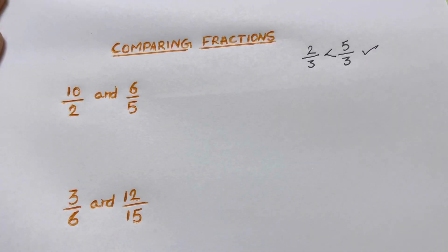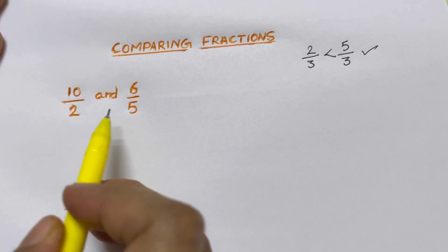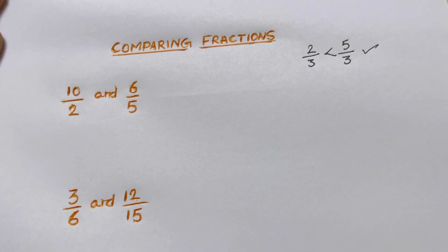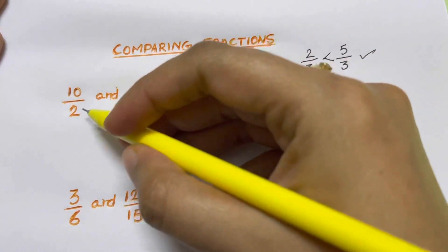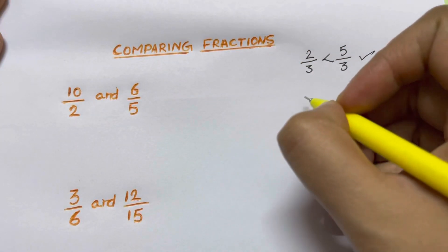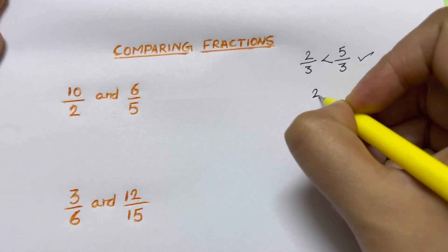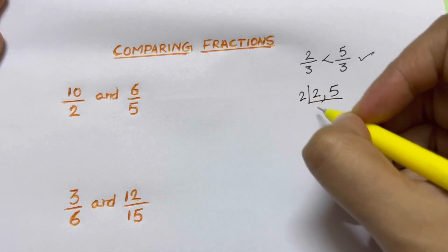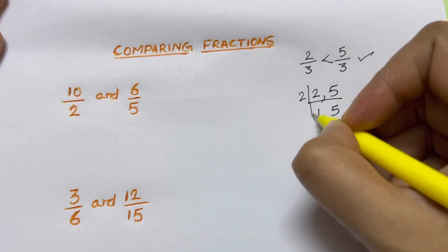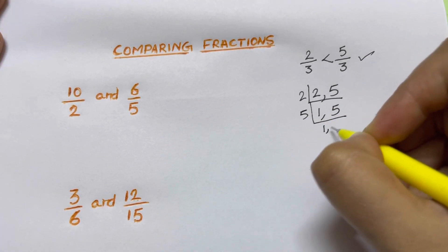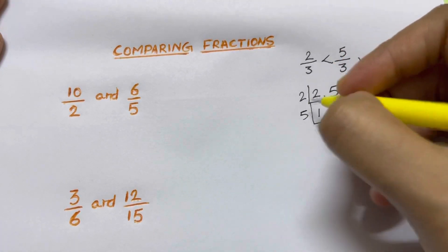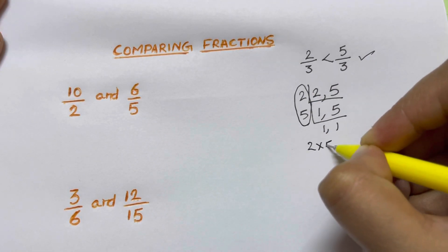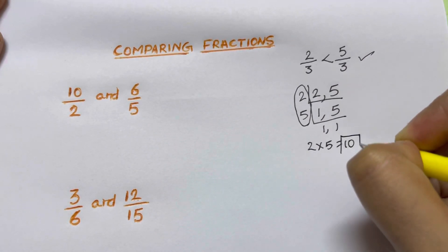Now for unlike denominators, we need to make the denominators equal. To do that, we take the LCM of 2 and 5 using the division method. 2 ones is 2, and 5 is not divisible by 2, so we take 5 ones is 5. Then we multiply these two numbers: 2 times 5 is 10. So 10 is your LCM.